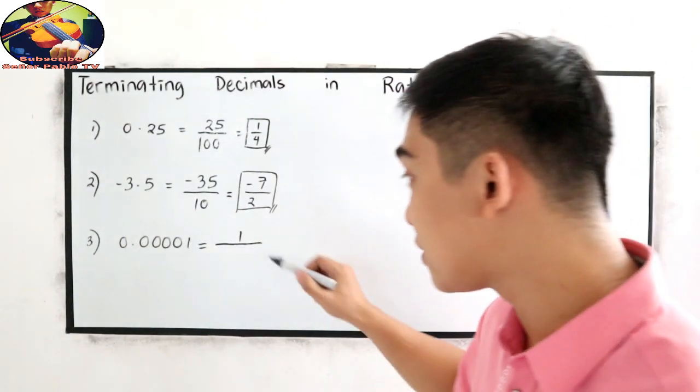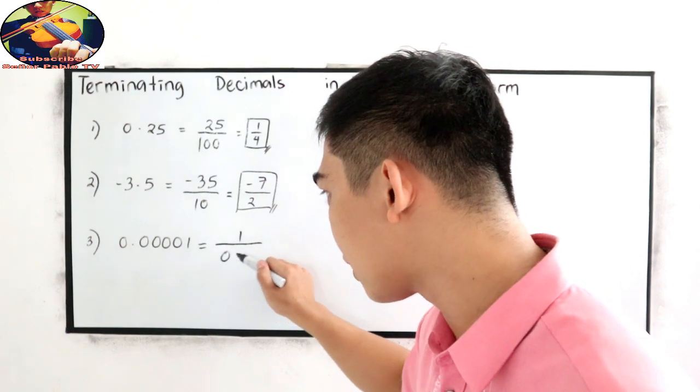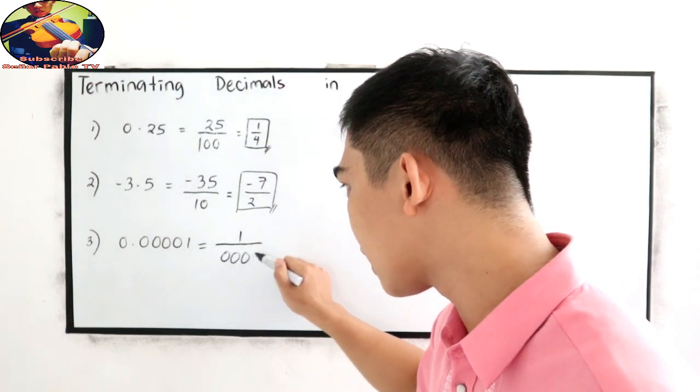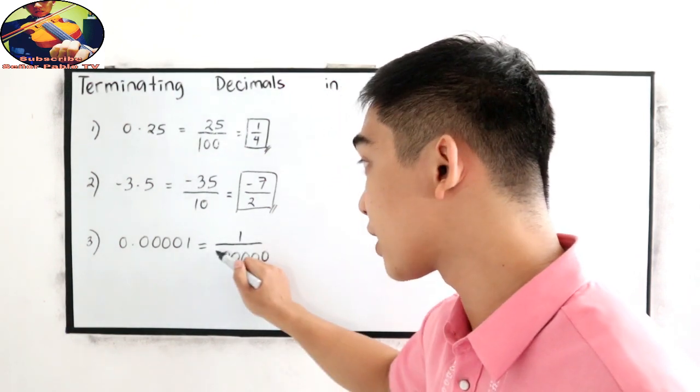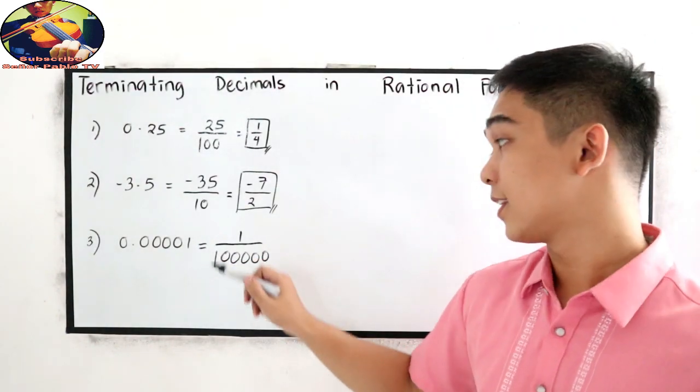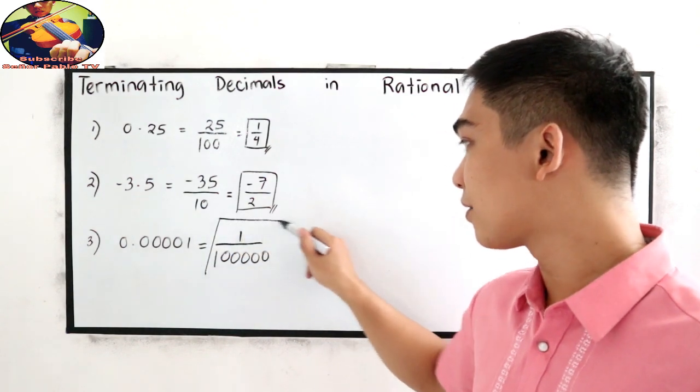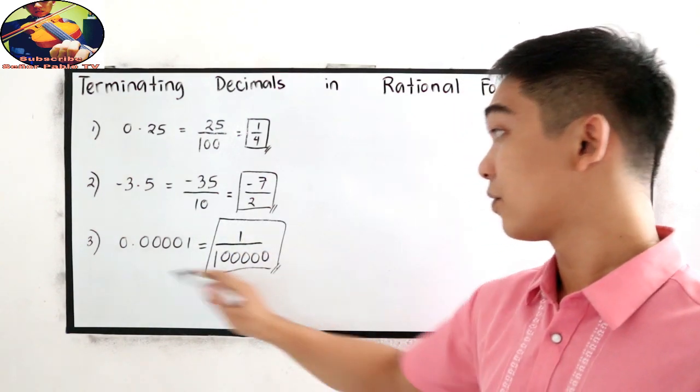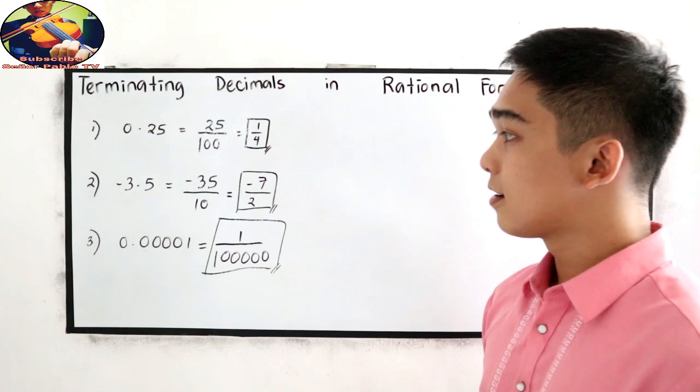So we have 5 zeros in our denominator. 1, 2, 3, 4, 5. Of course, write 1 on the left side. So this is the rational form of this decimal number.